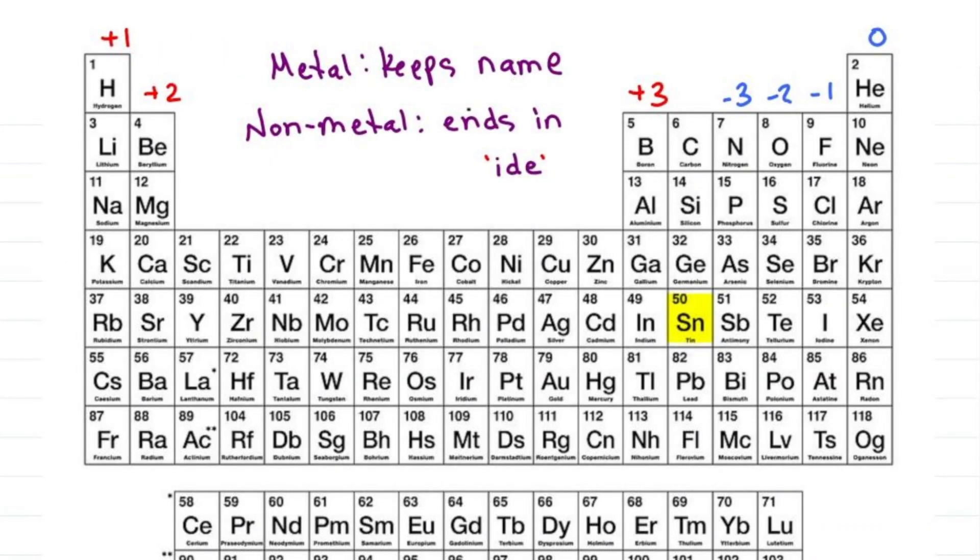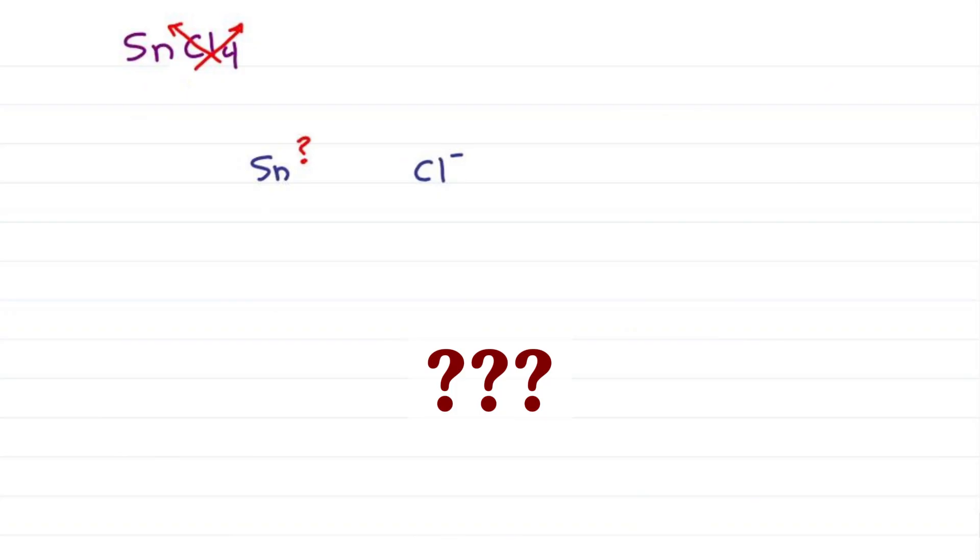Given SnCl4, Sn is a post-transition metal. Chlorine is minus 1. Reverse crisscross, but tin doesn't have a number. Actually, it has an invisible 1. We already know that chlorine is minus 1 and now we know tin is plus 4, which gives me tin 4 chloride.